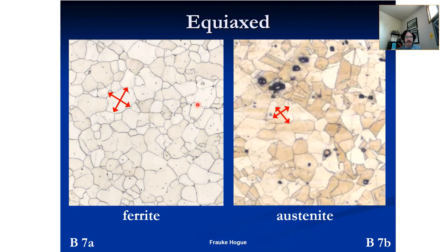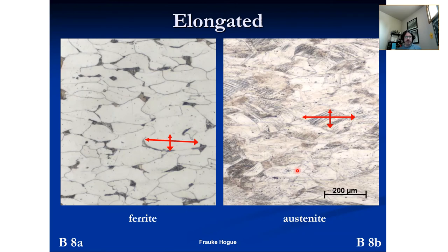We have ferrite with rounded grains and austenite with angular grains. However, if we take a survey of the dimensions in two directions orthogonal to one another, they're roughly the same size — so we'd say this is equiaxed. An elongated microstructure has some sort of aspect ratio. Again, this is ferrite and this is austenite. We can see there's one dimension that's definitely longer than the other — this is what we'd call an elongated grain.